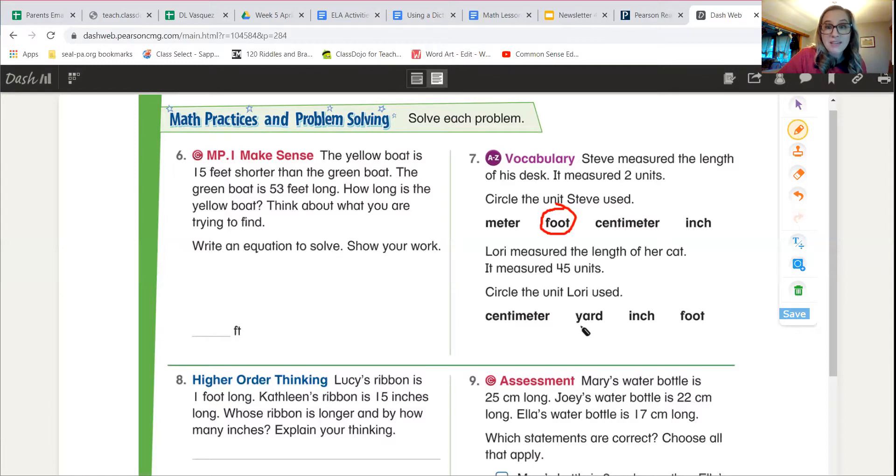45 feet. That would be 45 rulers. So the one that makes the most sense here would be centimeters for the length of a house cat.